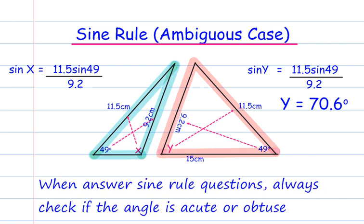Whenever you're answering sine rule questions, you always need to check whether your angle is acute or obtuse. You can do this by the diagram, or it may just ask you to find the obtuse angle.